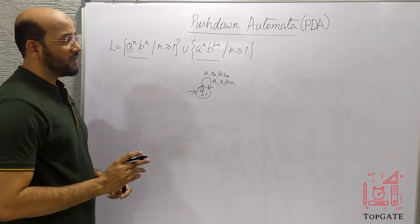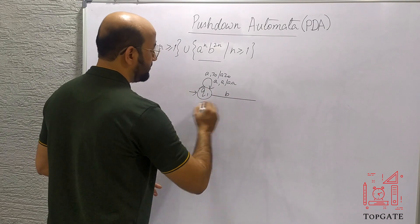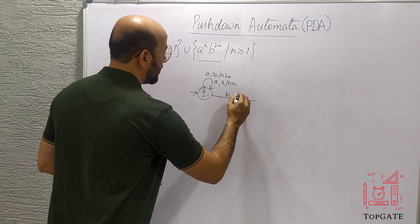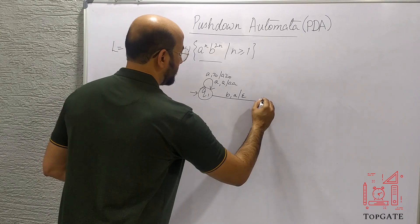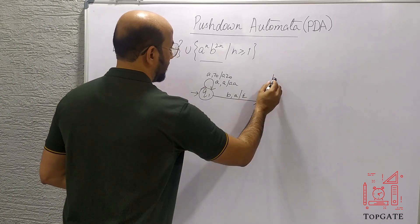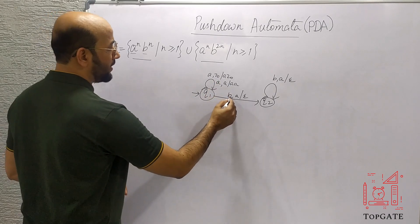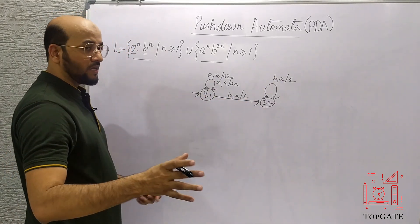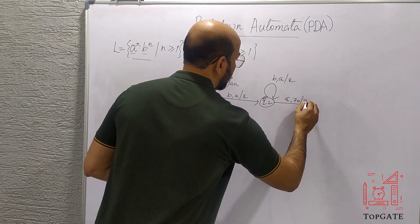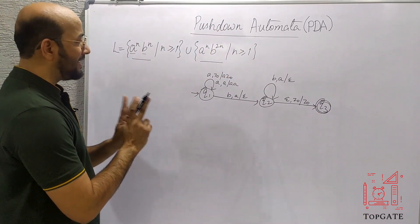As soon as b comes, we simply start popping the a's we pushed into the stack. For b, the topmost element will be a, so we pop it out and reach some other state Q2. At Q2 I will take a self loop — b comes, topmost element is a, we pop it out — so all the a's are popped. Then for epsilon comma Z0 slash Z0, that is a skip operation, we reach the final state Q3. We are done for the a^n b^n part.